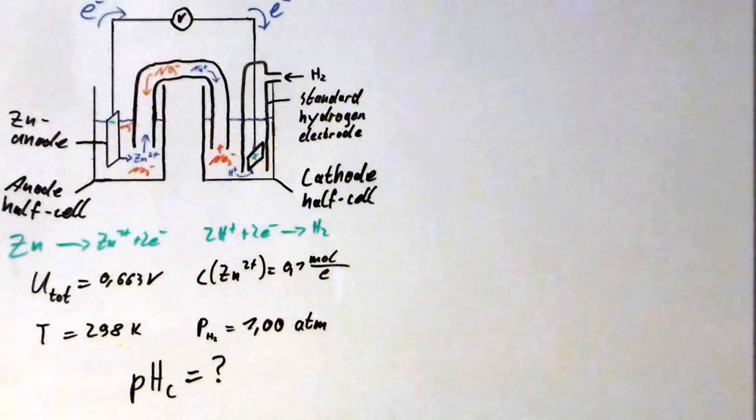First of all, since we know the standard potential of zinc and the concentration of the zinc ions, we have to calculate the potential of the anode half cell by using the Nernst equation.